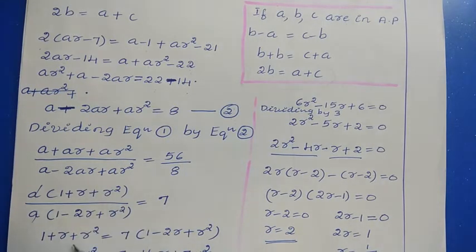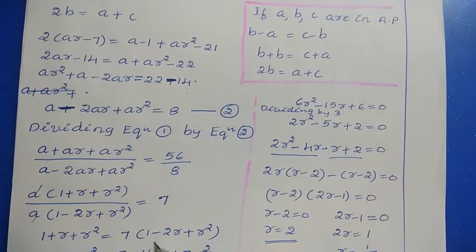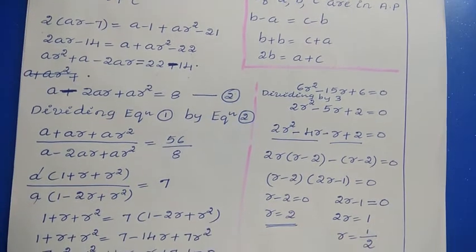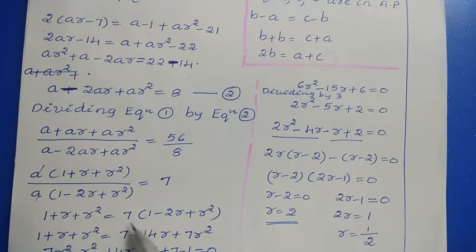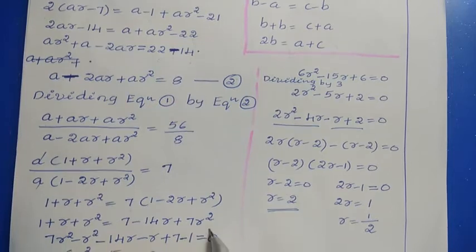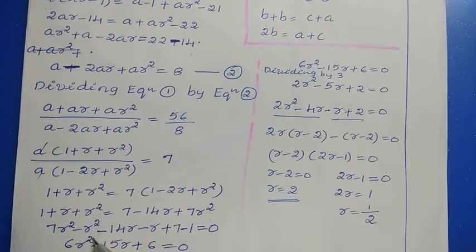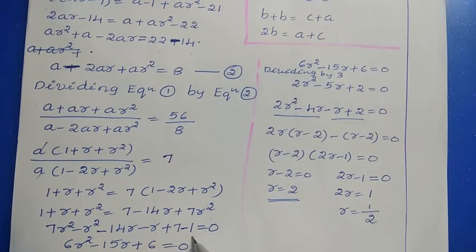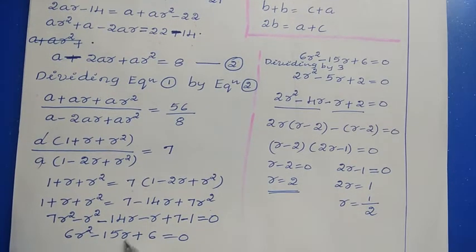Cross-multiplying: 1 plus R plus R squared equals 7(1 minus 2R plus R squared), which gives 1 plus R plus R squared equals 7 minus 14R plus 7R squared. Simplifying: 7R squared minus R squared minus 14R minus R plus 7 minus 1 equals 0, that is 6R squared minus 15R plus 6 equals 0.